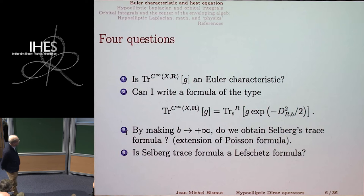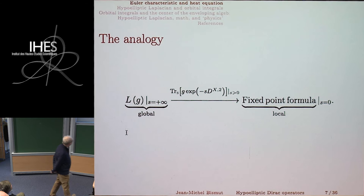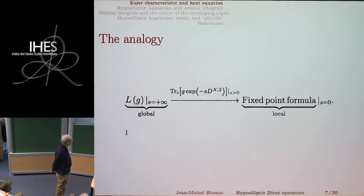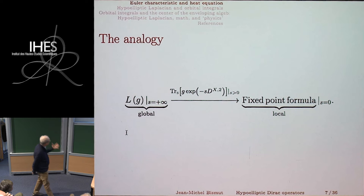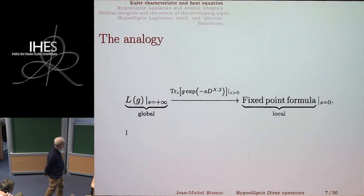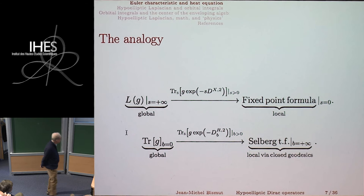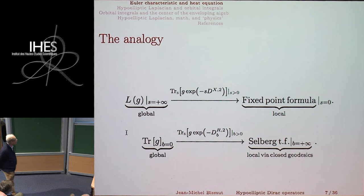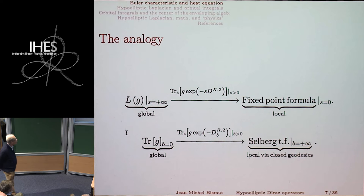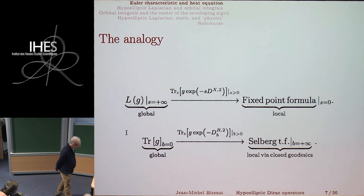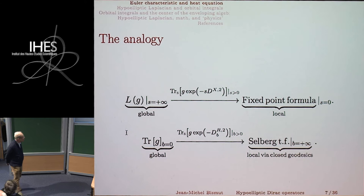Let me formalize the analogy. In the Lefschetz case, I had the Lefschetz number as a generalized Euler characteristic, computed via a fixed-point formula proven by interpolation using the Dirac complex. Now I start from the trace of the heat kernel, and I want to find something in the middle that does for us exactly what the Dirac complex did before. We are forced to consider the space of smooth functions as the cohomology of something — the question is: what is it the cohomology of?